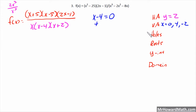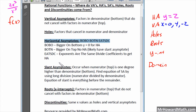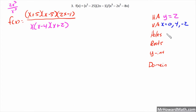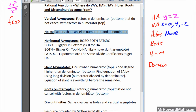Holes in the graph occur when factors cancel between numerator and denominator. We determined none of them canceled, so there are no holes in the graph. Roots come from factors in the numerator that do not cancel with factors in the denominator.